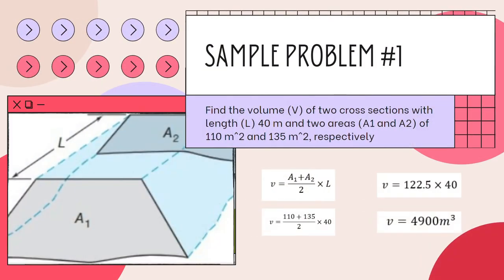Sample problem 1: Find the volume of two cross-sections with a length of 40 meters and two areas of 110 square meters and 135 square meters respectively. Plugging into the equation: (110 plus 135) over 2, times 40. Simplifying, we get 122.5 times 40, which yields 4,900 cubic meters as our final answer.